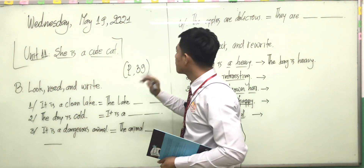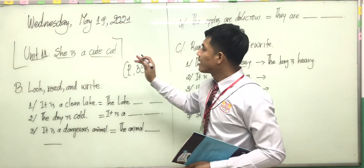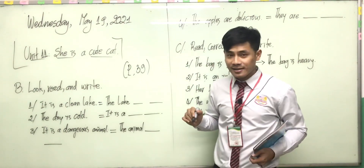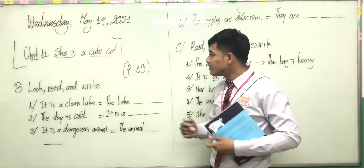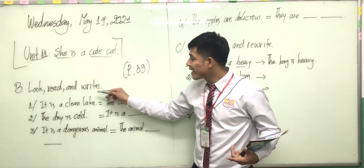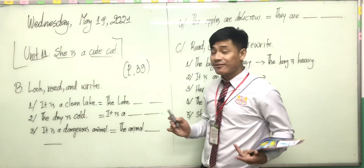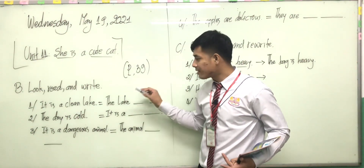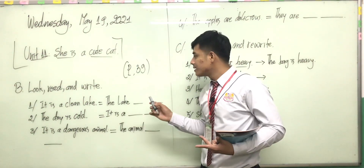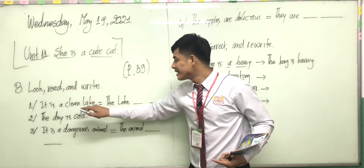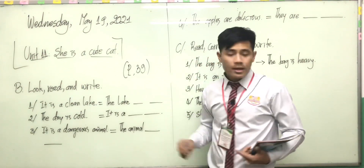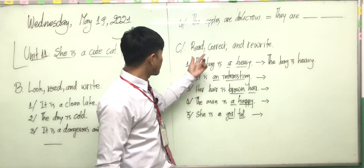Okay, page 99. All right, so we can continue. We're going to do exercise Part B: look, read and write. So look at the picture, then read the sentence and write it. Okay, and also Part C.